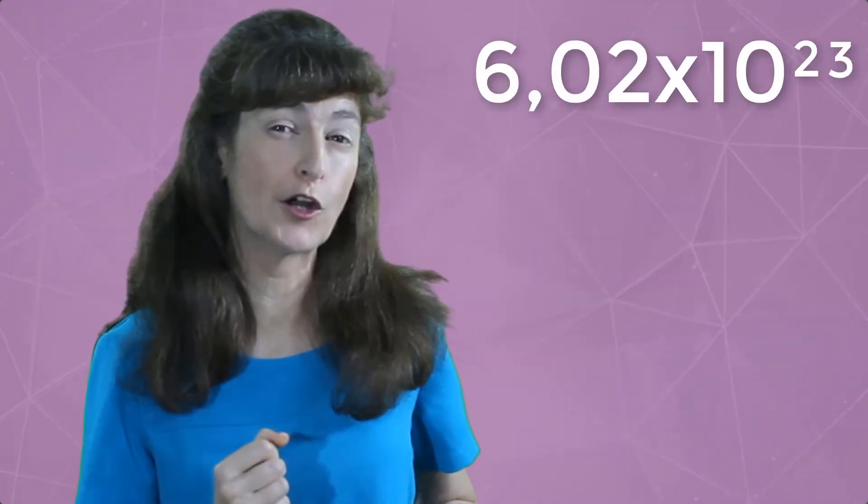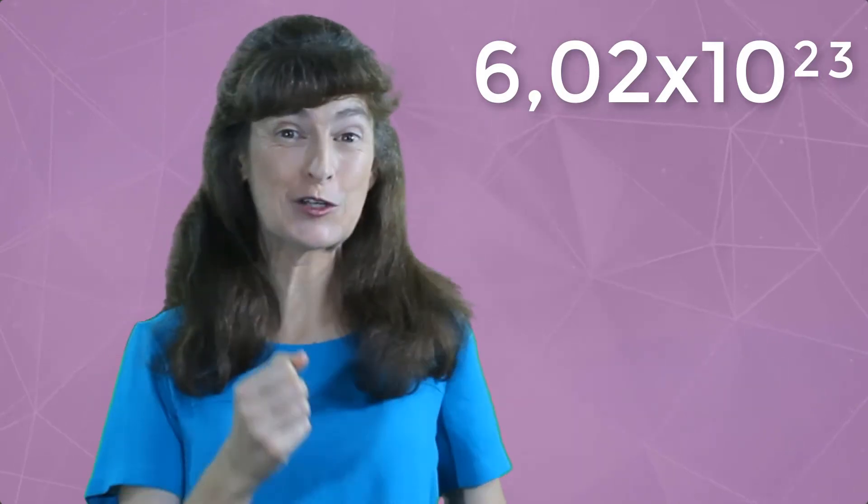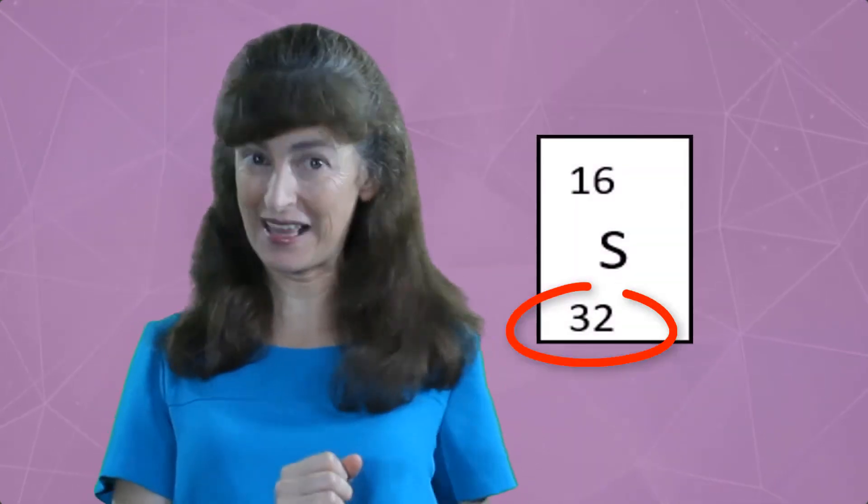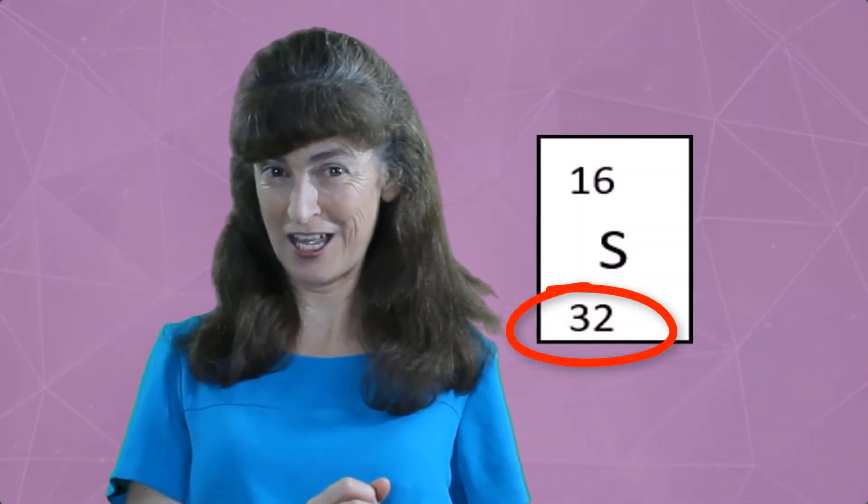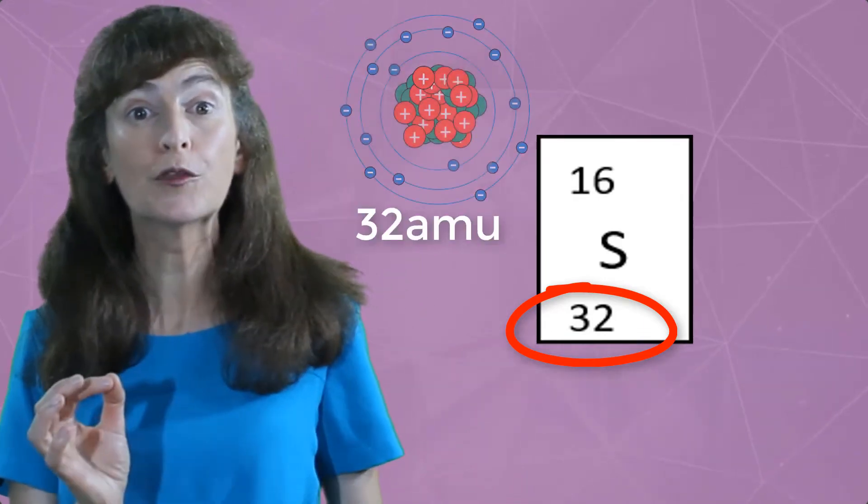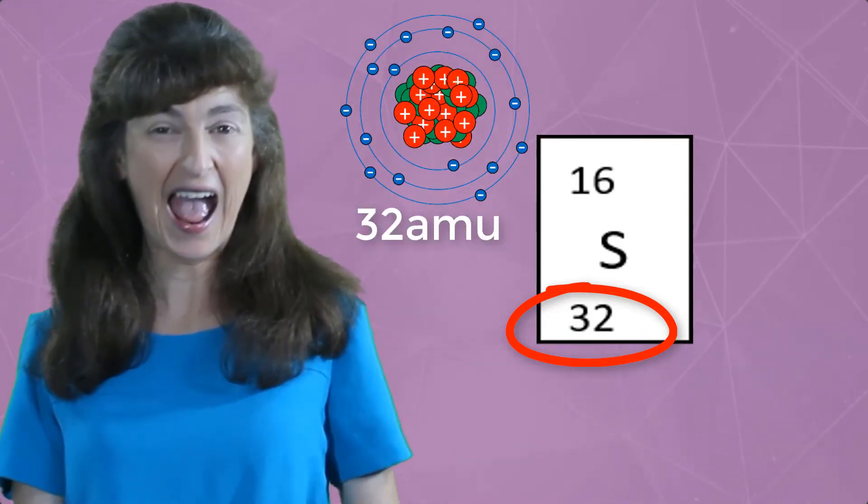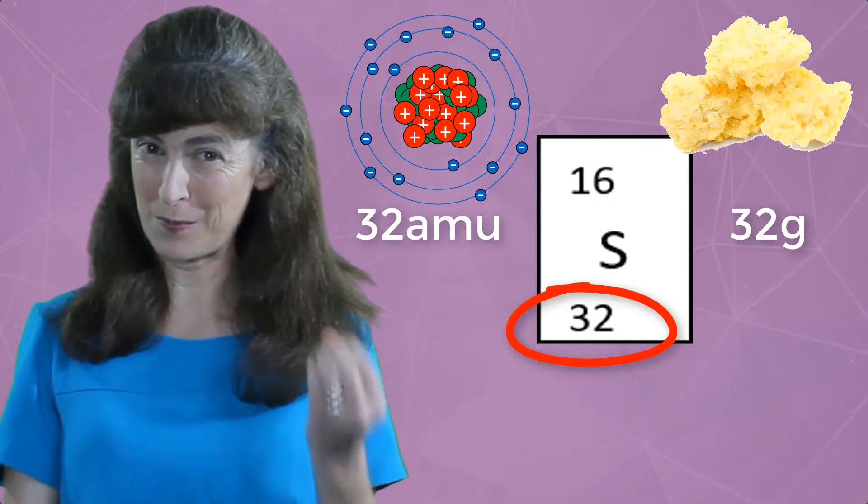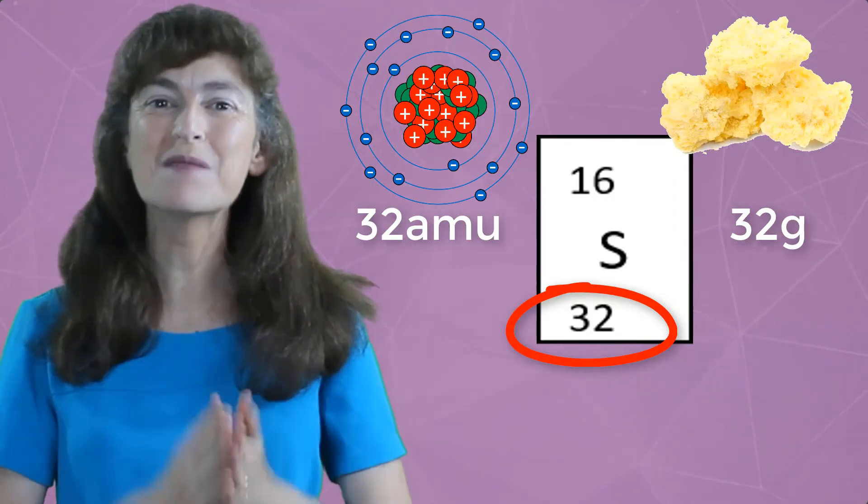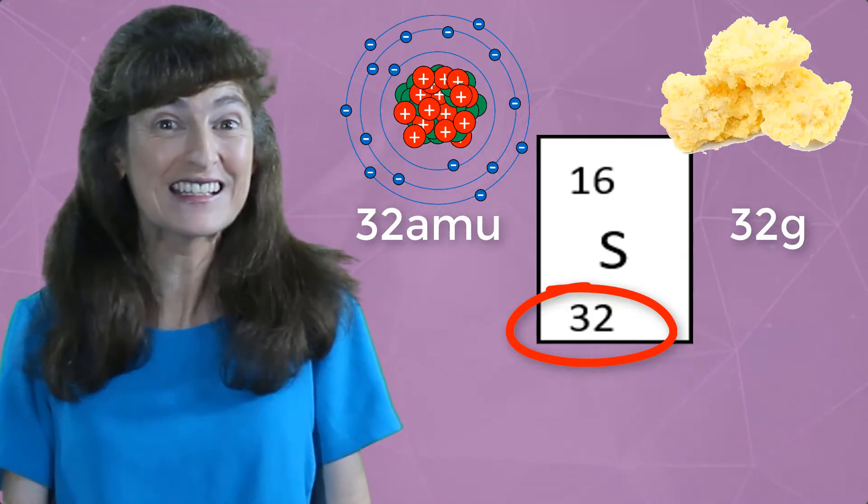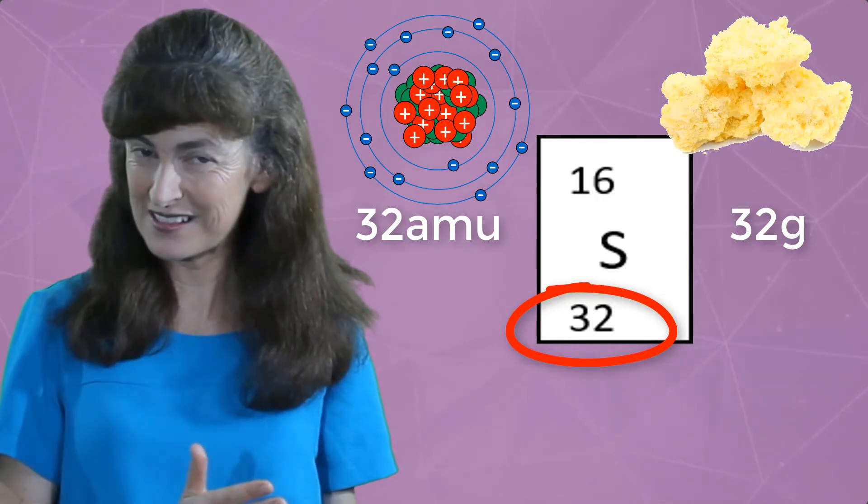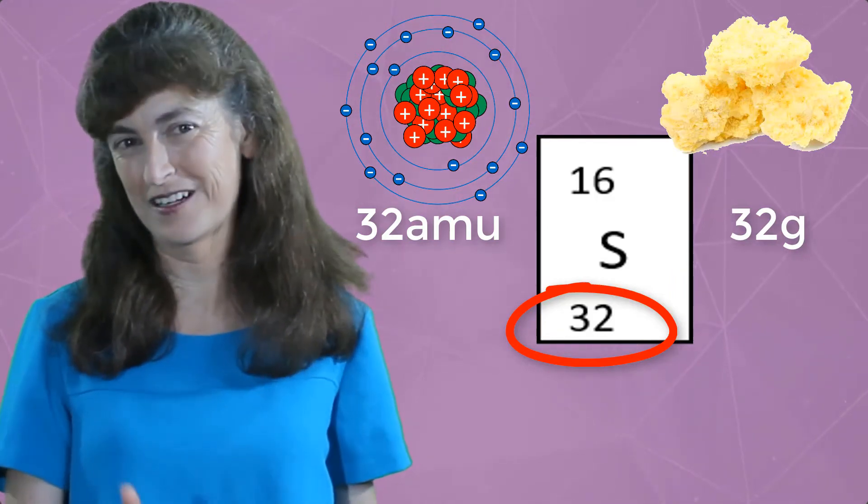And two, because using this particular number for our group word allows us to reuse the mass number of the periodic table in reference to both sub-microscopic and macroscopic masses, using the same number to refer to both of these, but just with different units and therefore different meanings.